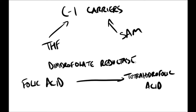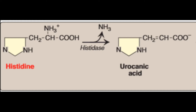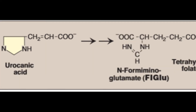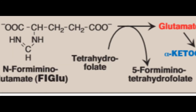An example is histidine: with the help of histidase, it breaks down to urocanic acid in a form of deamination. This will further become N-formiminoglutamate, where formiminoglutamate means it has a single carbon attached to it, and it becomes 5-formiminotetrahydrofolate.